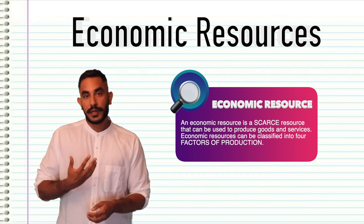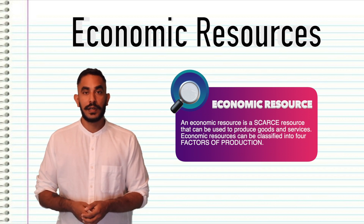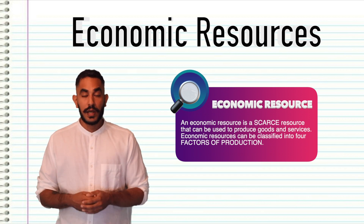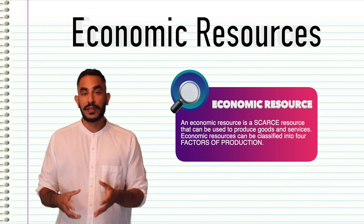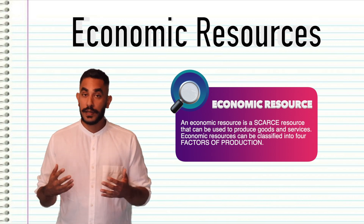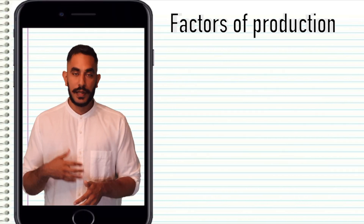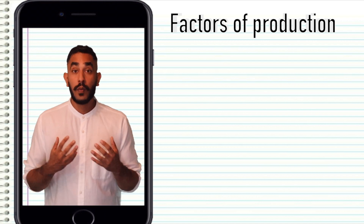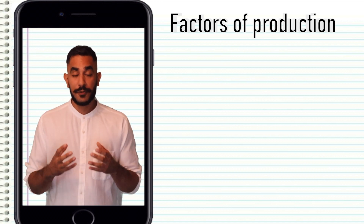An economic resource can be categorized into four groups. These four categories are known as the factors of production. So let's take a closer look. Let's imagine that we want to produce an iPhone. What do we actually need to produce this iPhone with?